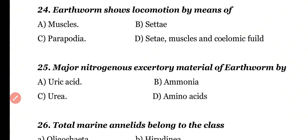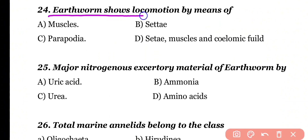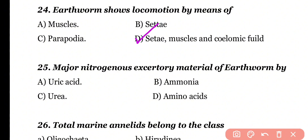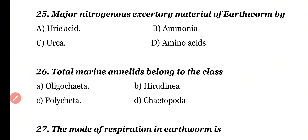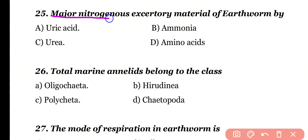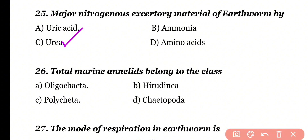Question number 24. Earthworm shows locomotion by means of: muscle, setae, parapodia, or setae, muscles, and coelomic fluid. Correct answer is option D. Earthworm is a ureotelic animal that excretes urea as a nitrogenous waste.